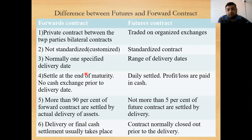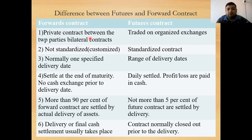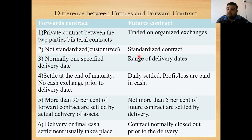Now we will discuss the differences between futures and forward contracts — the last topic for today. A forward contract is a private contract between two parties, a bilateral contract, and cannot be traded on organized exchanges. A futures contract is also bilateral but can be traded on organized exchanges. Forward contracts are not standardized — they are customized — whereas futures contracts are standardized, as per the standardization of public transactions.